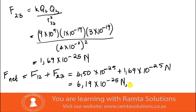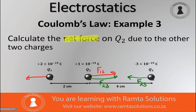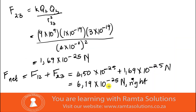So the net force on q2 due to the other two charges is 6.19×10⁻²⁵ newtons to the right. This is how you approach the question when asked to find the net force. With that being said, it's a wrap — see you next time, bye bye!